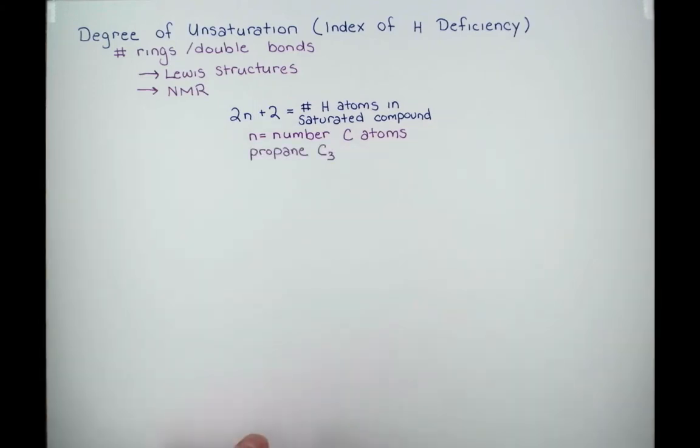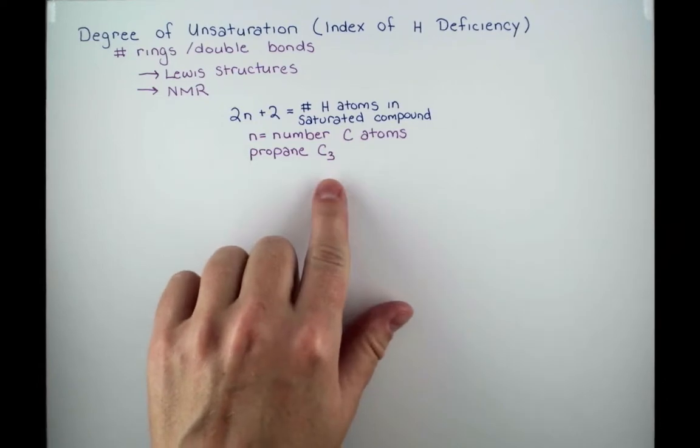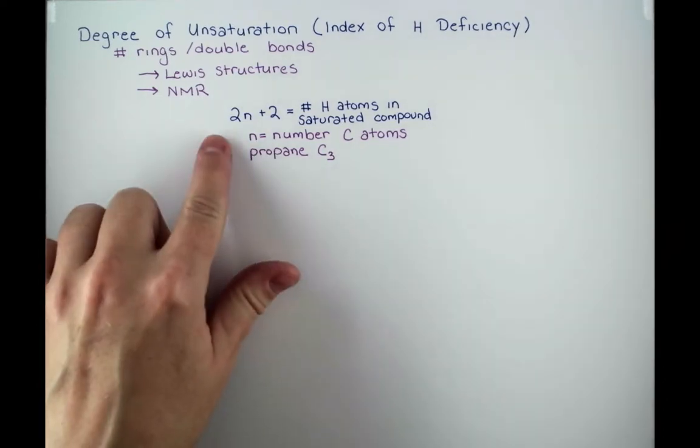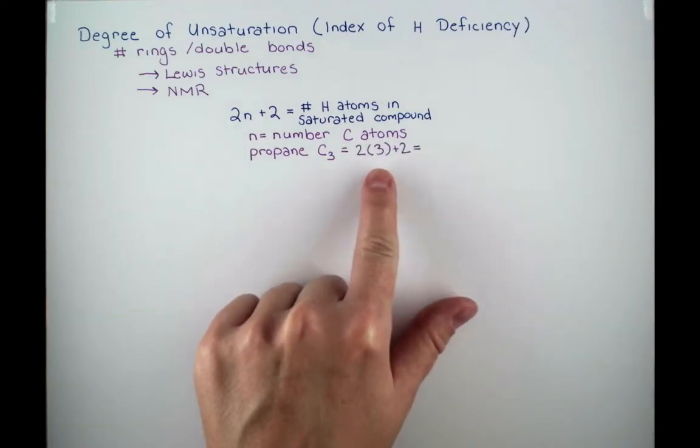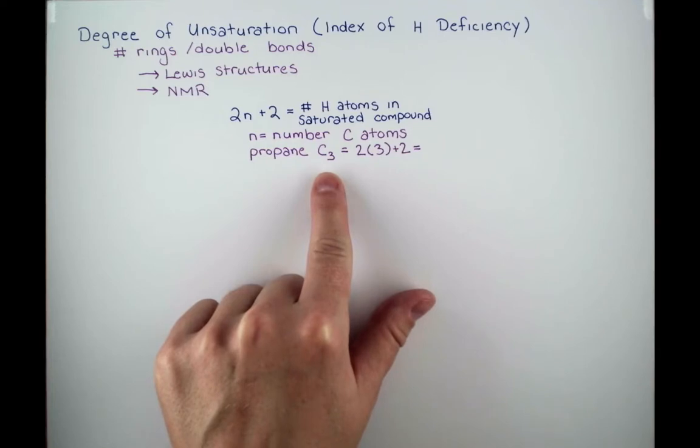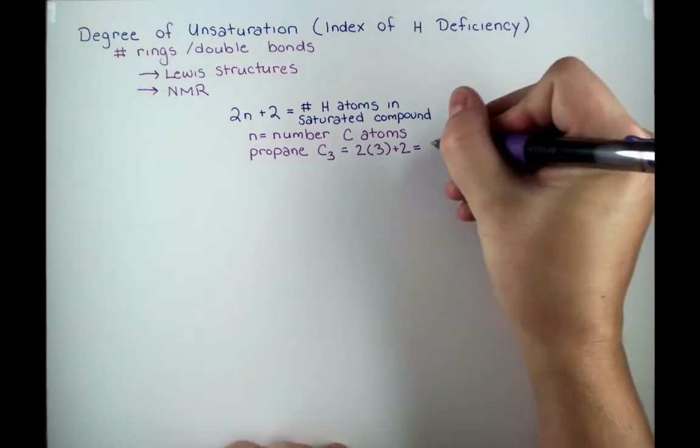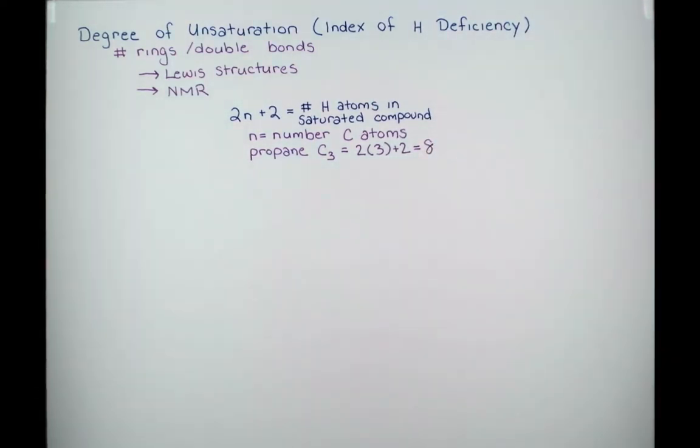Let's do a quick example to get started. Propane has 3 carbon atoms. So let's use our equation to figure out the number of hydrogen atoms it should have. Plugging the number 3 into our equation, we can see that the saturated compound should have 8 hydrogen atoms.